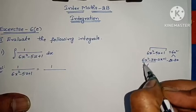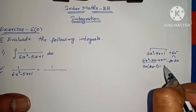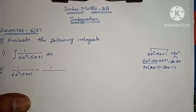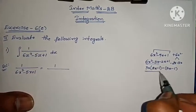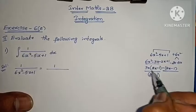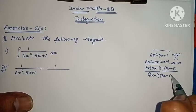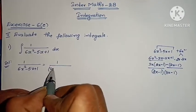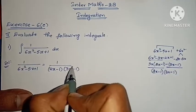Taking 3x common from the first two terms gives 3(2x minus 1). Taking minus common gives minus(2x minus 1). Now the two brackets give common factor (2x minus 1). So the factors are 2x minus 1 into 3x minus 1.